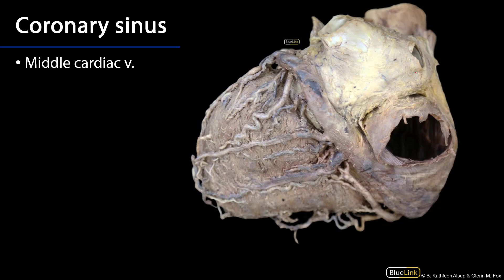So let's take a look at that — we've just rotated the heart around. Here is that diaphragmatic surface. There's the inferior vena cava, and here we can see quite a large coronary sinus which will be flowing into the right atrium. So the great cardiac vein feeds into the coronary sinus.